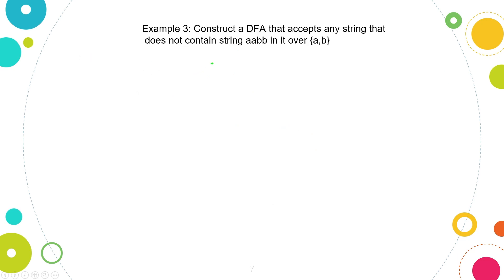Now we will look at an example to construct a DFA that accepts any string that does not contain AABB in it, over the alphabet {A, B}. What we will do is first construct a DFA that contains the string AABB, and then flip it.